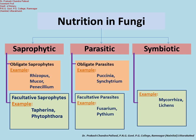Puccinia is responsible for the disease black rust of wheat, while Synchytrium is responsible for a disease of potato. The other category of parasites is facultative parasites — originally they are saprophytes, but in unfavorable conditions they can act as parasites. For example, Fusarium and Pythium. Fusarium is responsible for soft rot disease on many plants and fruits, while Pythium is responsible for damping-off disease as well as soft rot disease.